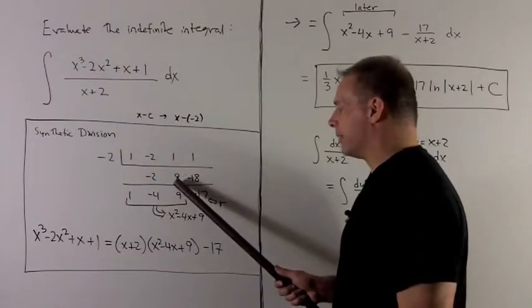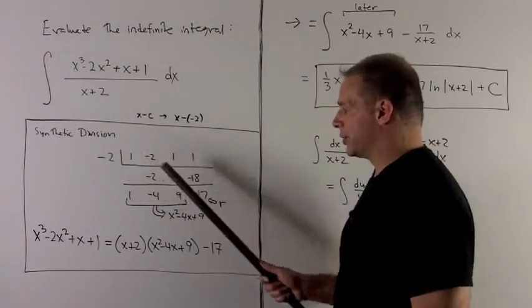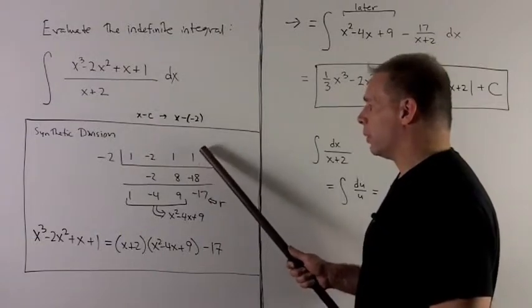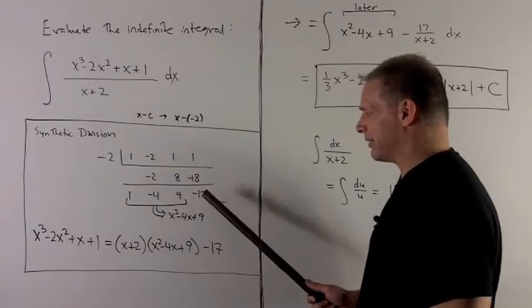The 1 comes down, hits the 8, giving me a 9 when I add them. The minus 2 hits the 9, giving me a minus 18 in this column. The 1 comes down, adds to minus 18, giving me a minus 17.